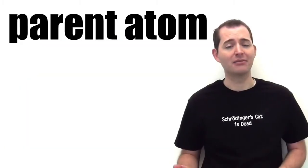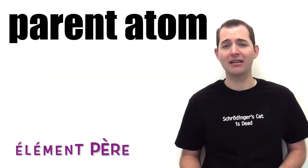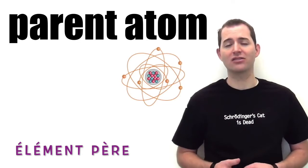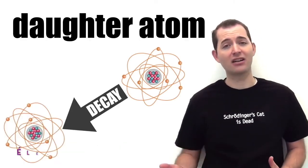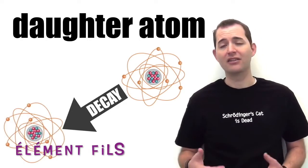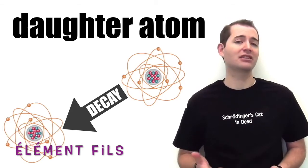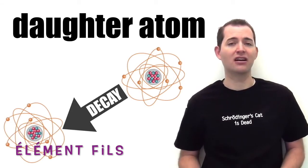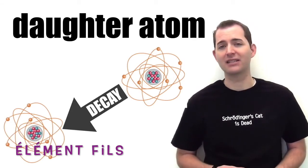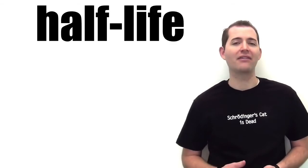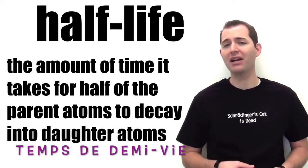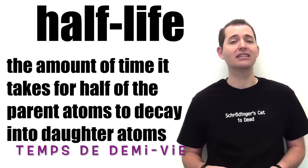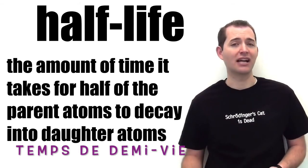Next is a parent atom. A parent atom is the atom before it undergoes radioactive decay, which is followed by a daughter atom. A daughter atom is the atom after it has already undergone radioactive decay. Our final important term is a half-life, which is the amount of time it takes for half of the parent atoms to decay into daughter atoms.